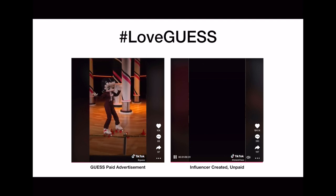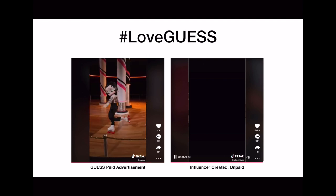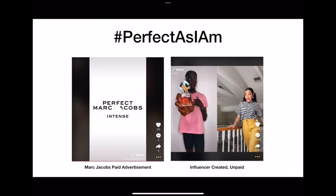Marc Jacobs launched the campaign Perfect As I Am to promote their new perfume by the same name. For this, the company teamed up with influencer Ricky Thompson. TikTok users were asked to record what TikTok calls a duet, in which a pre-recorded video of Ricky Thompson is used and featured in every user-generated video. Thompson has about 3 million followers, significantly more than Marc Jacobs' 17,000 followers. The video Marc Jacobs used to launch the Perfect As I Am campaign, which features models that were not conventionally attractive, only saw 129 likes. However, the campaign as a whole awarded the fashion brand with over 10 billion views.